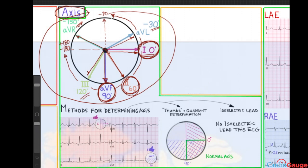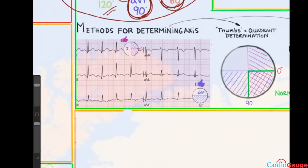So I use two different methods to determine the axis. And let's look at the first one here. I call it the thumbs method. And you apply the thumbs to leads one and AVF.